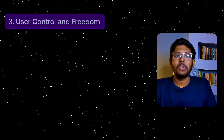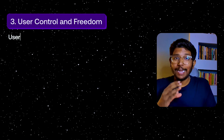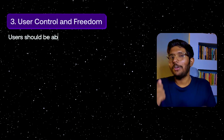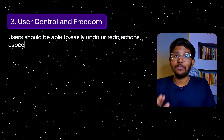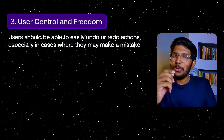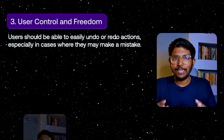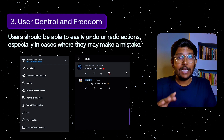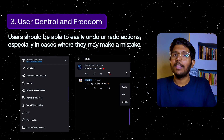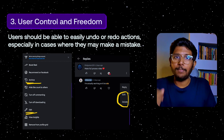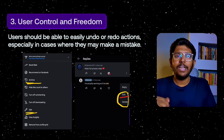Third principle: User Control and Freedom. The user should be able to undo and redo actions, especially in places where they make mistakes. For example, if a user posts something accidentally, they should have the option to delete or edit the post. This gives a flexible and forgiving experience and builds user confidence.